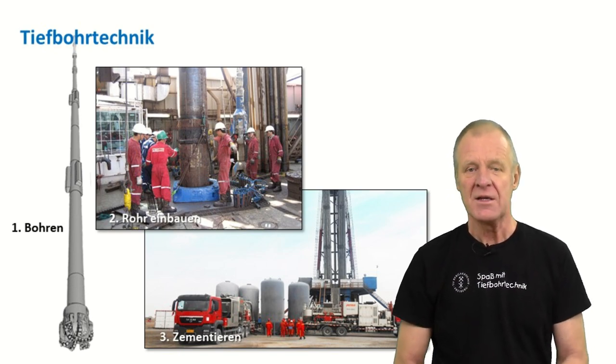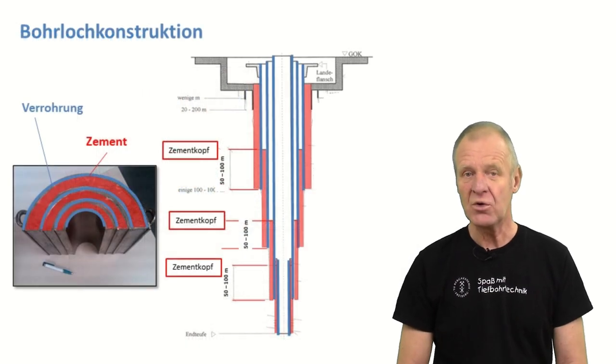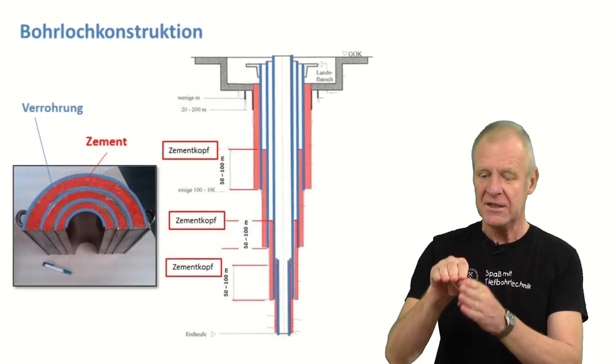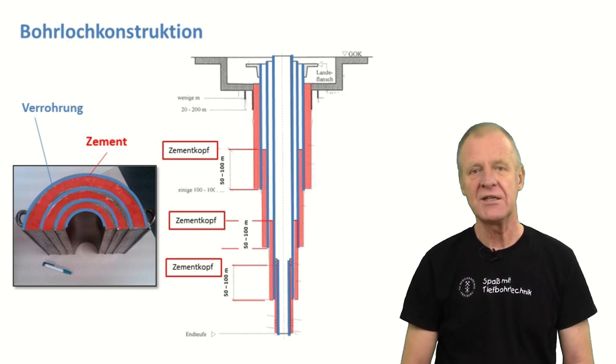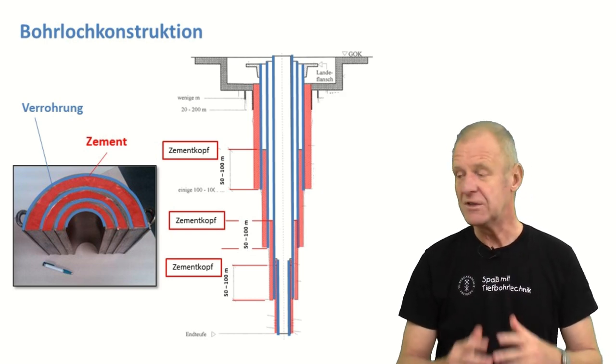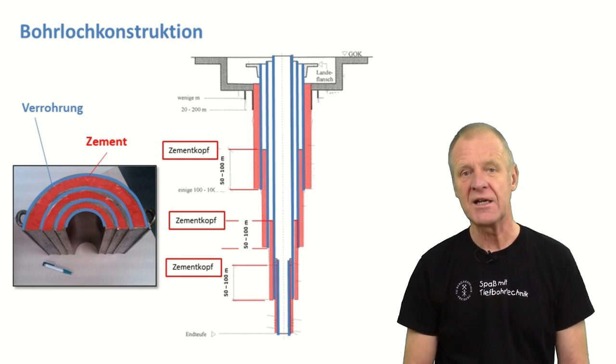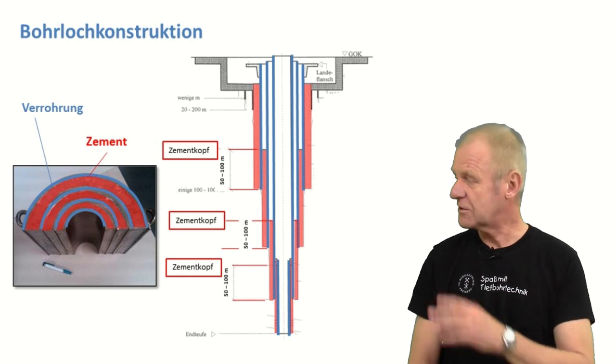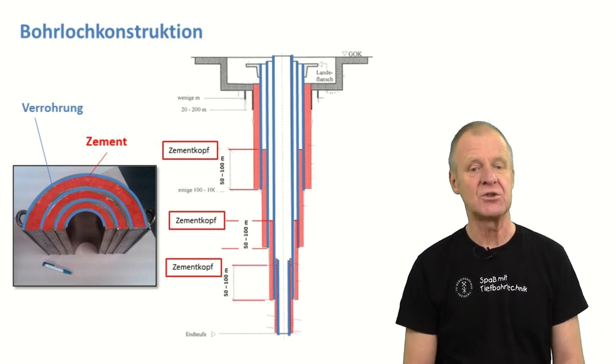When performing the cement job, you have to make sure that the cement column in the annulus reaches high enough into the previous casing string, so that the entire borehole is fully sealed against the surrounding formation. Nothing can get out of the borehole into the environment and vice versa. So it is really important that the cement head reaches the proper position in the annulus.